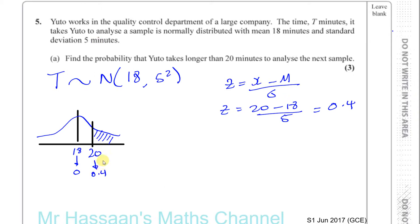We need the standardized value because the table in the formula book is only for the bell curve with a mean of 0 and a standard deviation of 1. This converts everything into that standard form — essentially finding how many standard deviations above the mean our value is. Here, 20 is 0.4 standard deviations above the mean. The area given in the tables is always to the left of the Z value, not to the right.